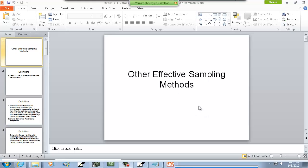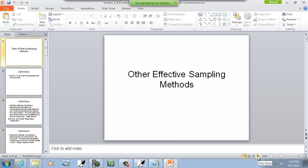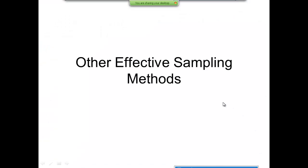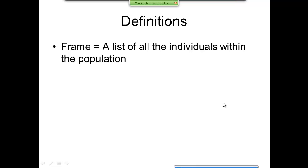Well, let's take a look at other effective sampling methods. Now, for some definitions, we have a frame. This is a list of all the individuals within the population. Sometimes it's important to understand what your population consists of so you can understand how to create a sample.